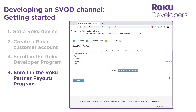Finally, you'll need to complete tax forms. If you're in the United States, you'll complete a W-9. If you or your company is located outside the United States, you'll complete the applicable W-8 form. Individuals will complete a W-8 BEN; entities will use the W-8 BEN-E form. The W-8 form is a US tax form that international partners must provide before they're allowed to distribute monetized channels in the Roku Channel Store.